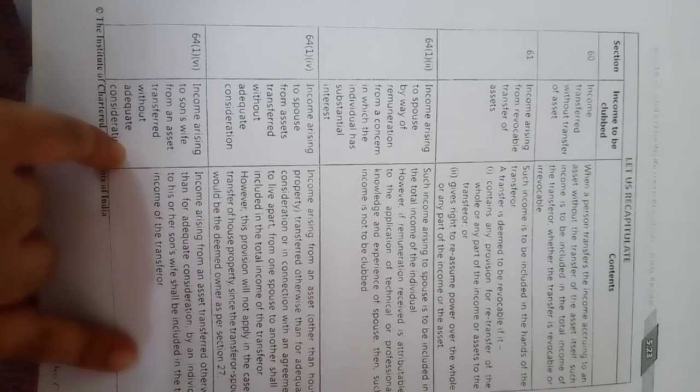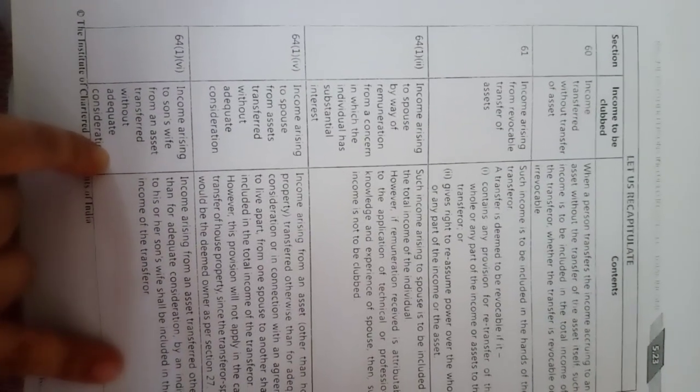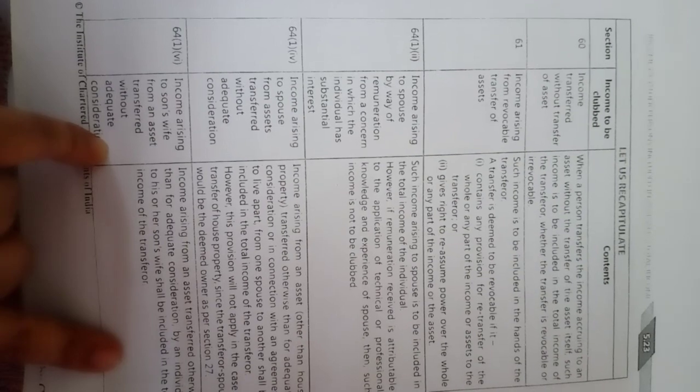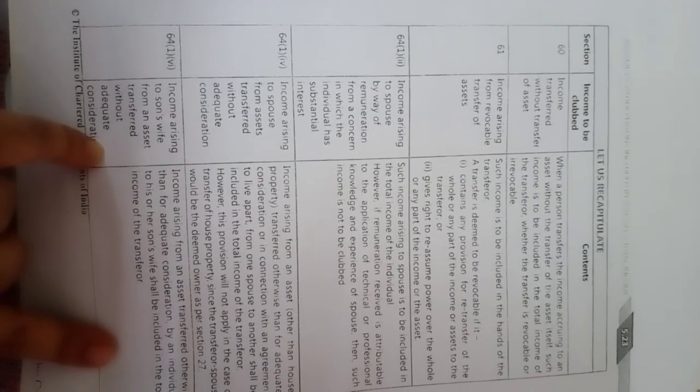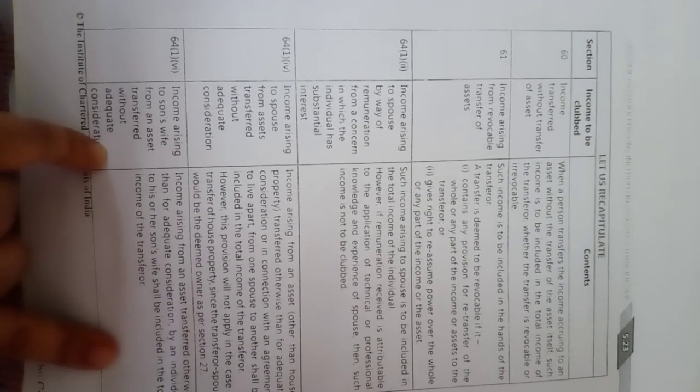According to Section 60 — income transferred without transfer of asset — when a person transfers the income accruing to an asset without the transfer of the asset itself, such income is to be included in the total income of the transferor, whether the transfer is revocable or irrevocable. For example, if there is an FD and the interest from that FD is transferred to another person but the FD remains with the transferor, that income is considered the transferor's income.